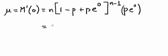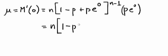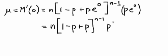Which is n times 1 minus p, plus p — because e to the zero is 1 — to the n minus 1, times p, times 1, because e to the zero is 1.